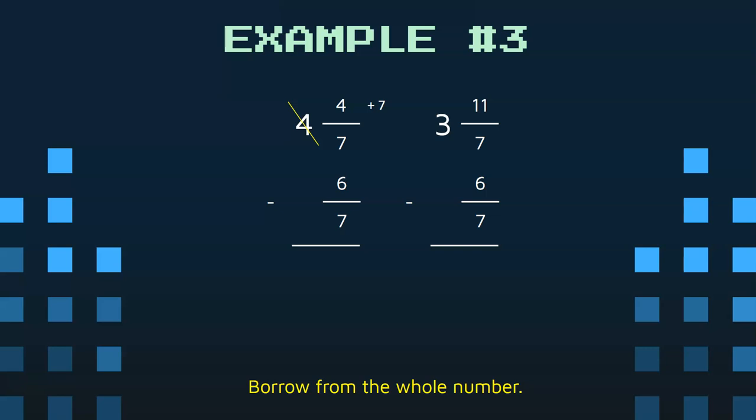But how much did we borrow? We borrowed 1. A whole. We borrowed 1. So we're not going to put a little 1 next to the 4. That's not a whole number. That's putting a little 1 next to the 4. No, we want a whole number. So what would a whole number be in this problem? Looking at your denominator, what would a whole number be if we were to make it sevenths? How many sevenths would equal 1? Well, 7 sevenths would. 7 sevenths equals 1.